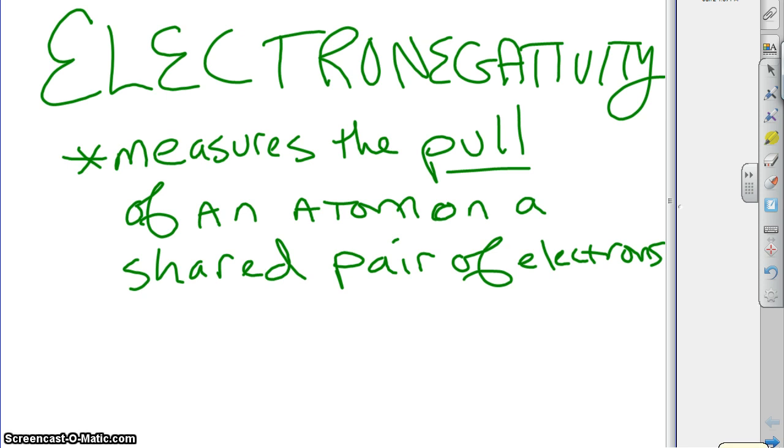So what are we going to do with this? Who cares? Well, what we're going to do with this is we're going to look at different kinds of bonds. So there are three types of bonds that we can illustrate with these electronegativity values.